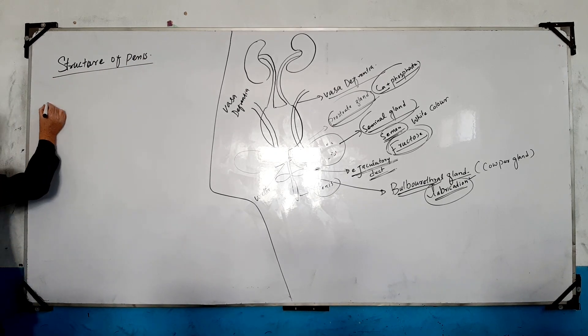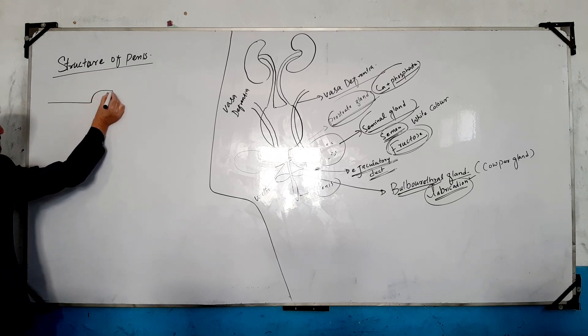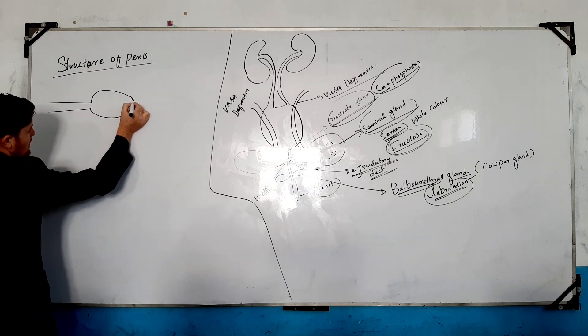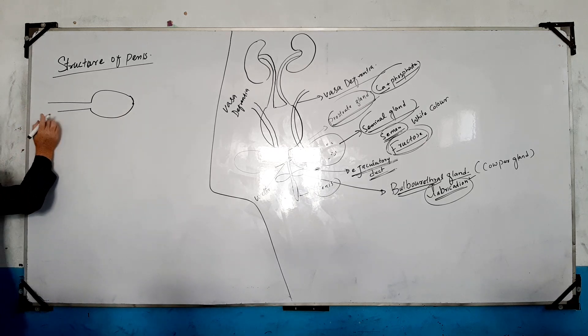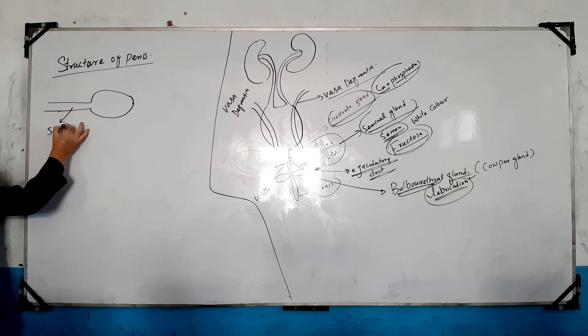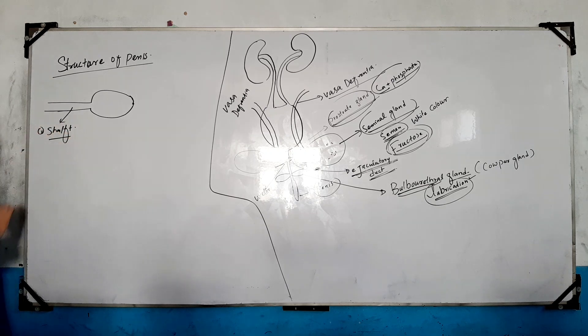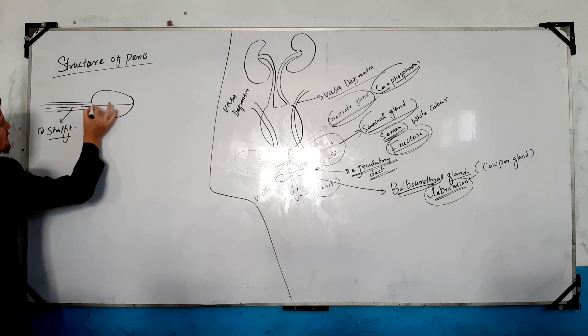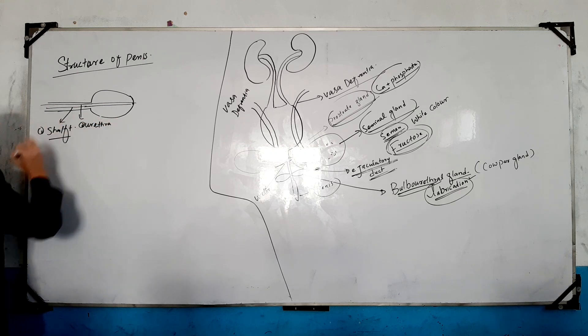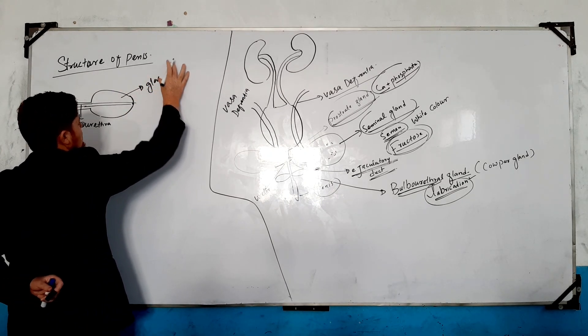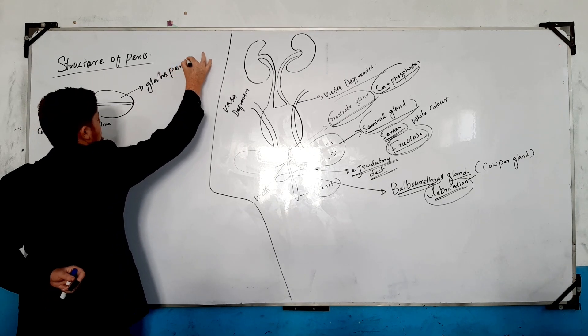This one is the structure of the penis. This one is the shaft, this one is the glans penis. This one is the start of the urethra.